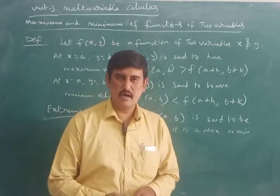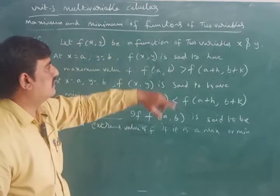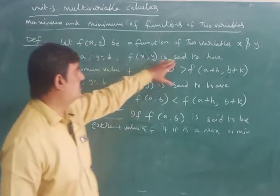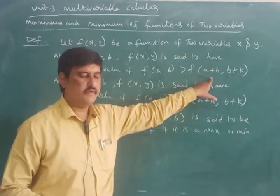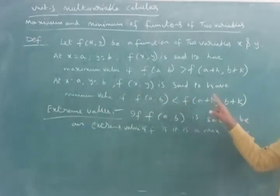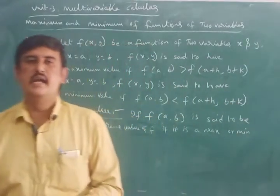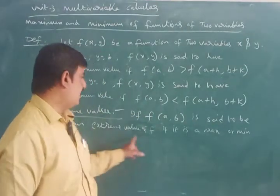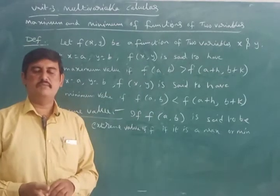Now let us start the topic maxima and minima of a function. See the definition. Maxima and minima of a function of two variables: let f(x, y) be a function of two variables x and y. At x = a and y = b, f(x, y) is said to have a maximum value if f(a, b) > f(a+h, b+k). It has a minimum value if f(a, b) < f(a+h, b+k), where h and k are small values. f(a, b) is called an extreme value if it is either a maximum or minimum value.